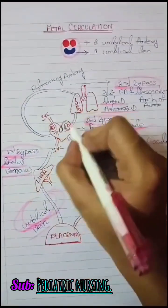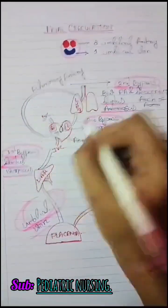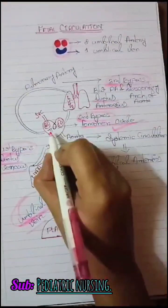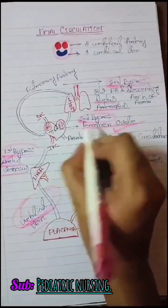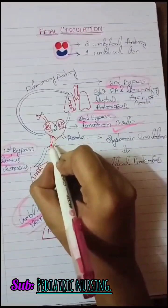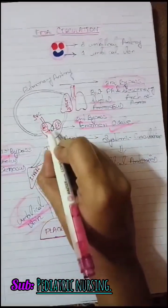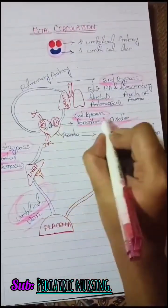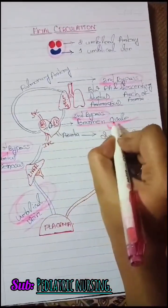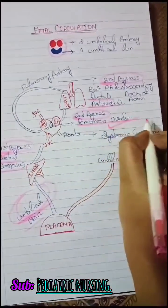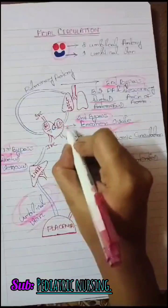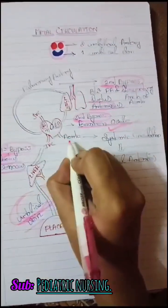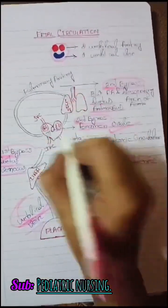Then the blood comes to the right atrium. The right atrium sends the blood to the left atrium and right ventricle. The right atrium sends the blood to the left atrium via the second bypass called the foramen ovale. Then the blood comes to the left ventricle, then the aorta.